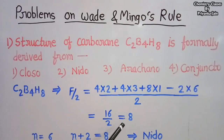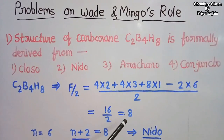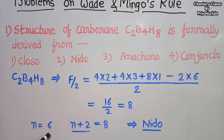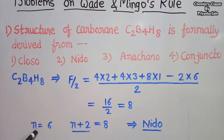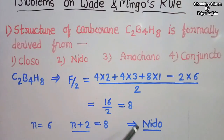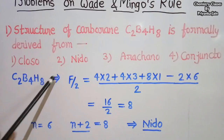There are 8 skeletal electron pairs. The number of vertices is 6 (2 carbon + 4 boron atoms). Since 8 = n + 2 (where n = 6), this belongs to the nido family. So this compound is nido — option 2 is correct.